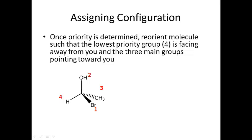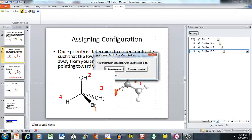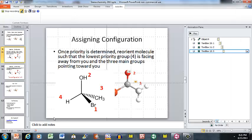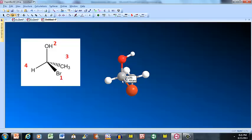We have an issue here because in order to assign a configuration, we first have to reorient this molecule so that the lowest priority group is facing away from us and the top three groups are facing toward us. I want to show you this in 3D. I want group four to face away from me and these three groups to be facing toward me.